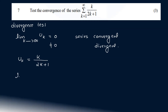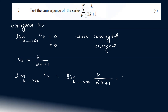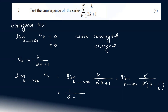Now the question is on the table. We have the limit as k tends to infinity of u_k, which equals the limit as k tends to infinity of k divided by (2k plus 1). That gives us 1 divided by (2 plus 1/infinity). Since 1/infinity equals 0, the limit is 1/2.